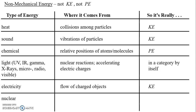Usually the last type of energy students identify is nuclear. Where does nuclear energy come from? It comes from the relative positions of subatomic particles. When we say position, that sounds like potential energy — the particles inside the atom have energy stored up, and when you break those bonds or form other bonds, there's an exchange of energy at the nuclear, subatomic, microscopic level. You can't see these things, so it is a non-mechanical form of energy. So all types of energy really break down into kinetic energy (energy of motion), potential energy (energy of position), or electromagnetic radiation — which is totally different from all other types.